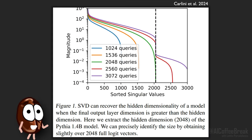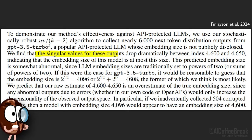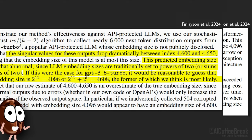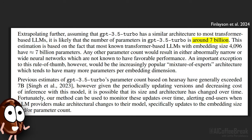Just to convince you, here you can see the same phenomenon discovered by the other paper. And lo and behold, Finlayson and collaborators found out the embedding size of GPT-3.5 Turbo. They say the singular values for these outputs drop dramatically between index 4600 and 4650. This predicted embedding size is somewhat abnormal, since LLM embedding sizes are traditionally set to powers of 2 or sums of powers of 2. If this were the case for GPT-3.5 Turbo, it would be reasonable to guess that the embedding size is 2 to the power of 12 — so 4096 — or 2^12 + 2^9 which is 4608, the former of which they think is most likely.